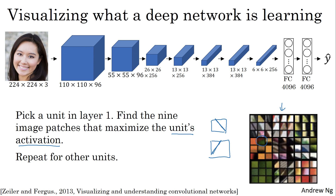This shows nine different representative neurons, and for each of them the nine image patches that they maximally activate on. This gives you a sense that hidden units trained in layer one are often looking for relatively simple features such as an edge or a particular shade of color. All the examples in this video come from the paper by Matthew Zeiler and Rob Fergus titled 'Visualizing and Understanding Convolutional Networks,' which also presents more sophisticated visualization techniques.